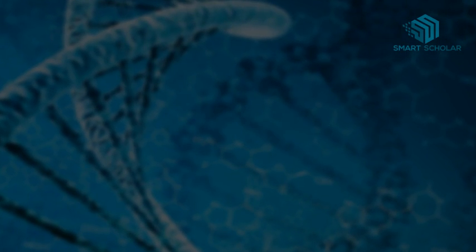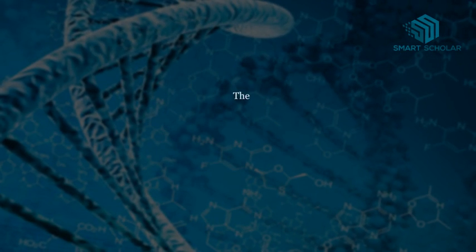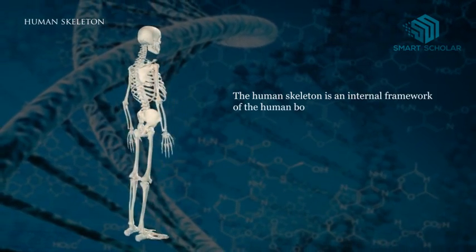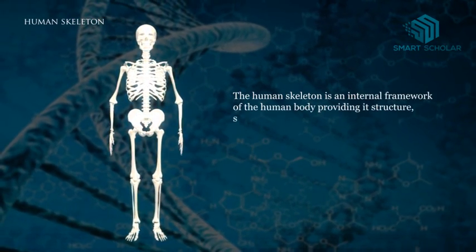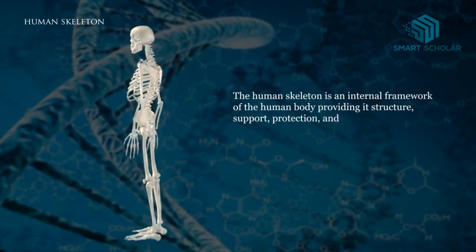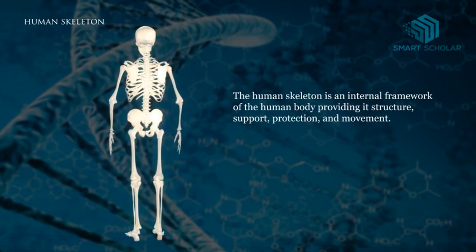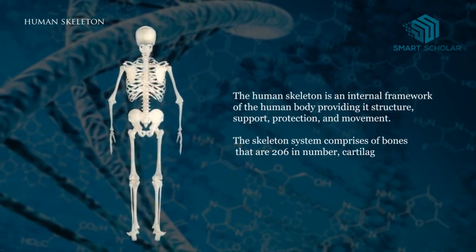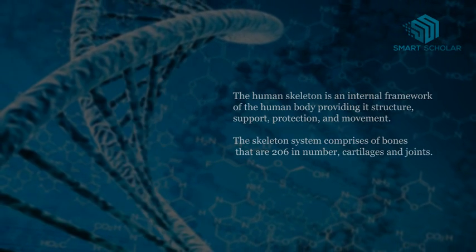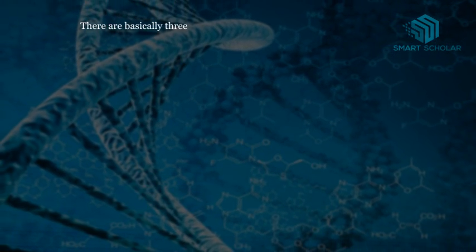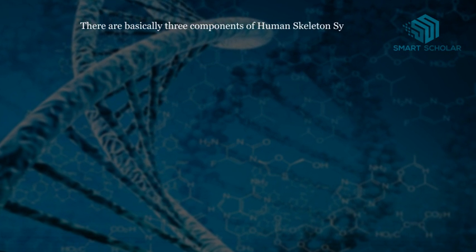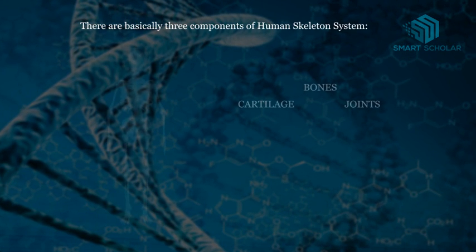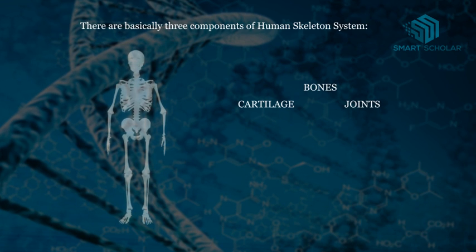The Human Skeleton System. The human skeleton is an internal framework of the human body providing its structure, support, protection and movement. The skeleton system comprises of bone, cartilages and joints. There are basically three components of the human skeleton system: Bones, Cartilage and Joints.